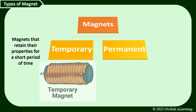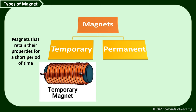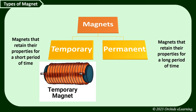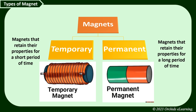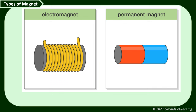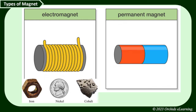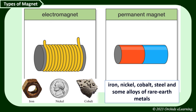There are two types of magnets: temporary and permanent. Magnets that retain their properties for a short period are called temporary magnets. Magnets that retain their properties for a long period are called permanent magnets. Temporary magnets are usually made of iron, cobalt, and nickel. Permanent magnets are made from mixtures of iron, cobalt, or nickel with other materials.